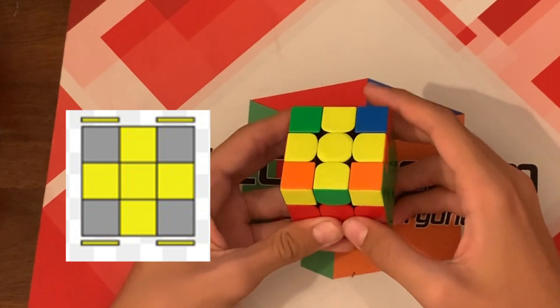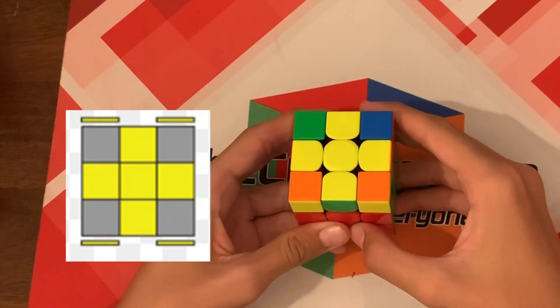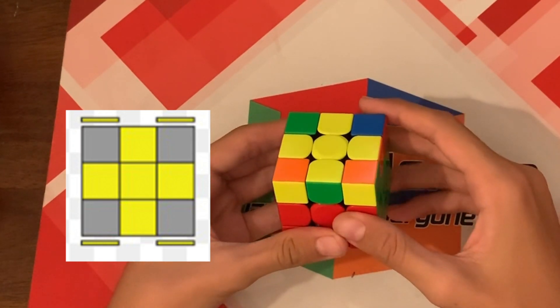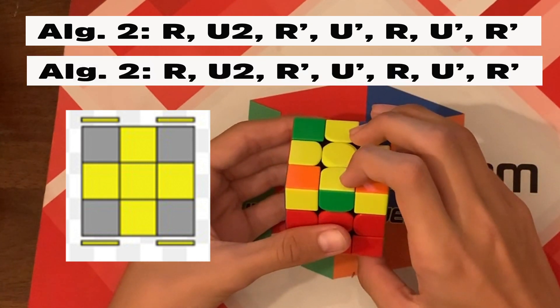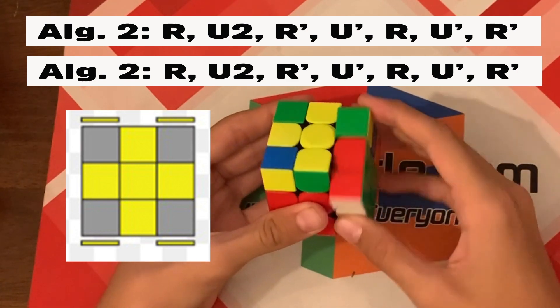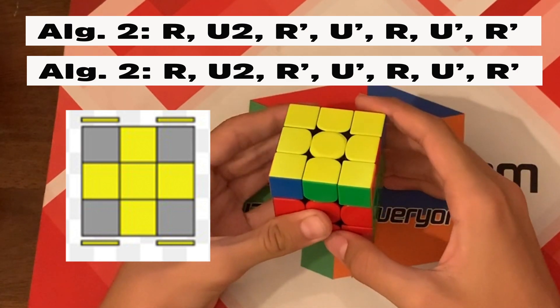If your yellow face looks like this, you're going to do algorithm two. And then another algorithm two. And then another algorithm two.